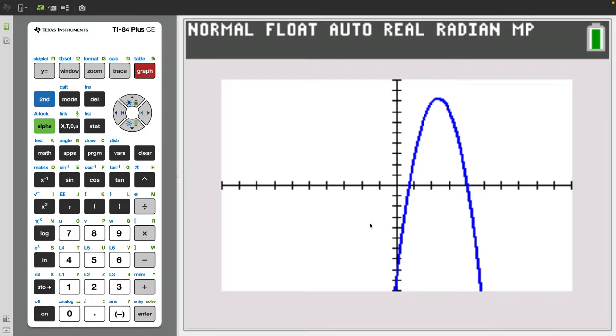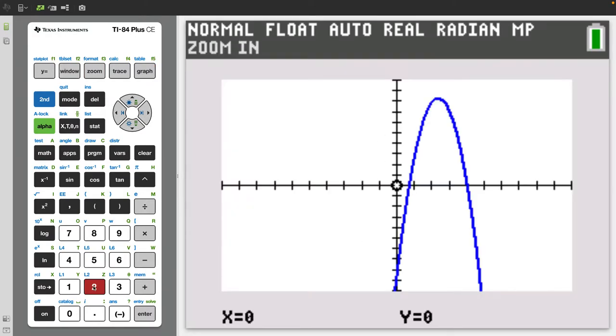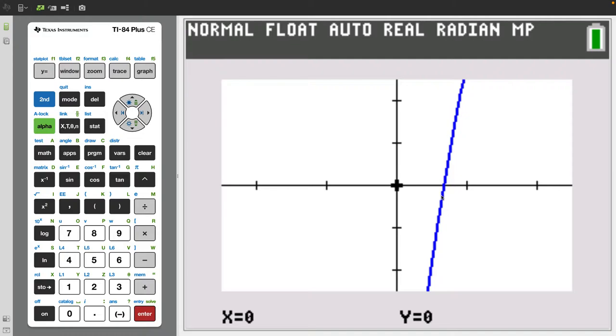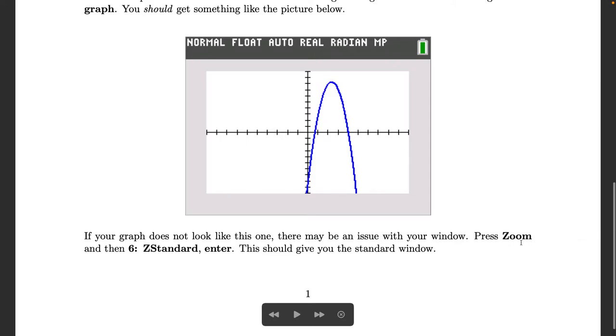Now oftentimes this is not the window that you have. You might see it zoomed in or zoomed out, so let me zoom in and let's say that your calculator makes it look like this. So this might be a setting preserved from a previous problem that you did where you maybe needed to zoom in to find an x intercept. The way you would get out of this is by pressing zoom and then clicking 6 or z standard enter.